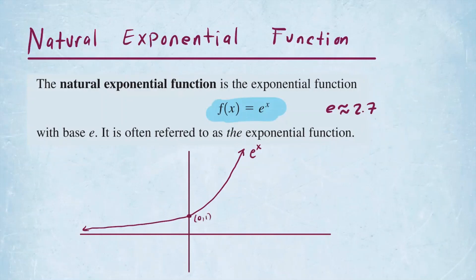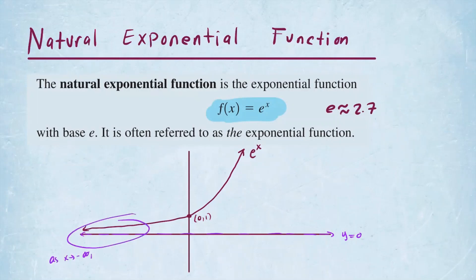This graph also has another property — it has an asymptote. This line right here, the x-axis, which I'm drawing with a dotted line in a different color, represents the horizontal asymptote of this function. As x goes to negative infinity, the function e to the x is going to approach 0. It gets very close to 0 but it's never going to touch. So it has a horizontal asymptote at y equals 0.